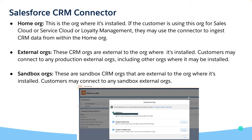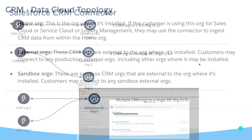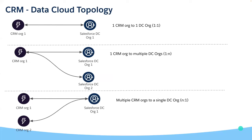The CRM connector is set up by the data cloud admin, who is responsible to do that. Using starter bundles makes your life simpler — you can just add and bring whatever you want from your org. Pictorially, your org and your data cloud org connect one-to-one, one-to-many, and many-to-one.